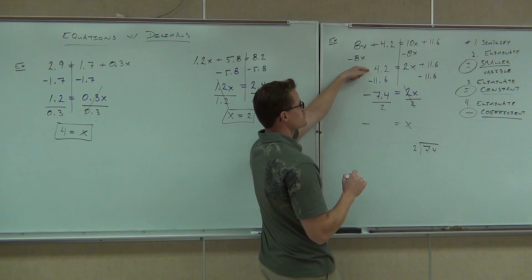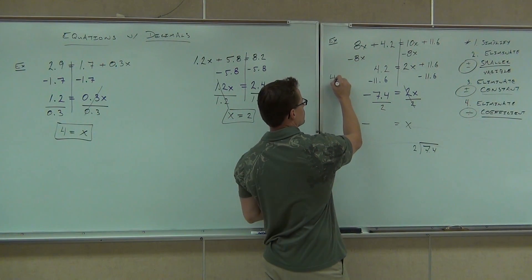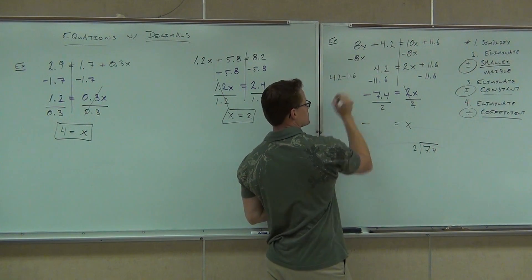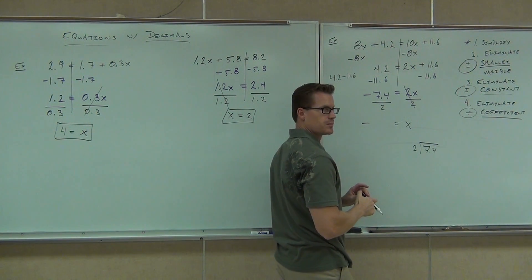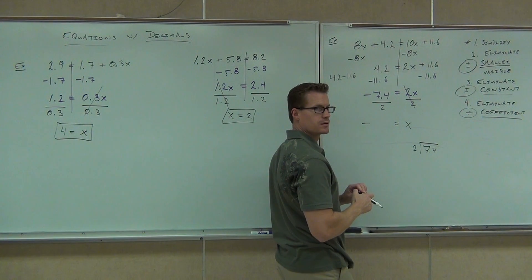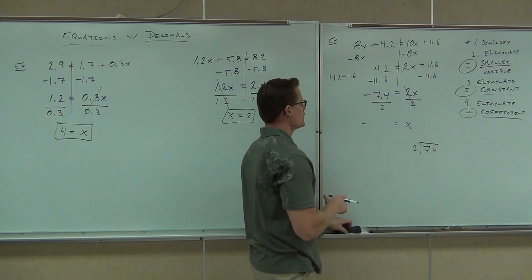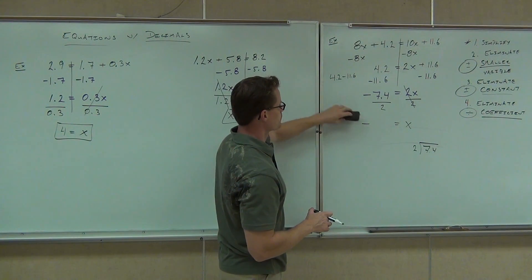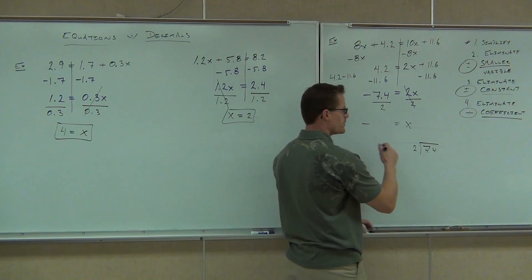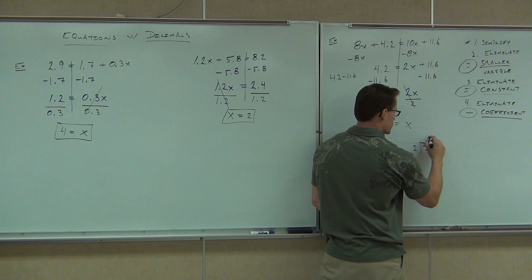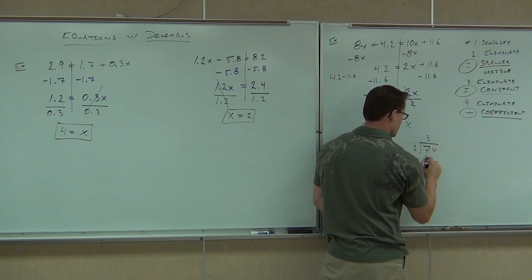You are combining these two. You're subtracting. Notice this is 4.2 minus 11.6. That's it. Hang on. Let me finish this off, and then I'll go back to that. So, I'm sorry. What did you get? 3.7. 3.7.